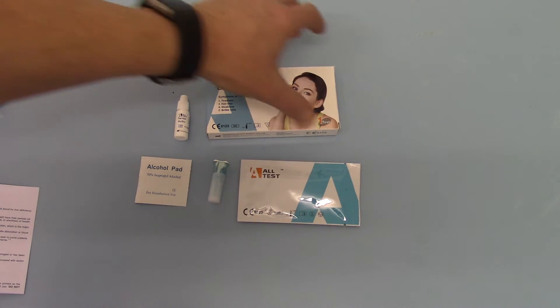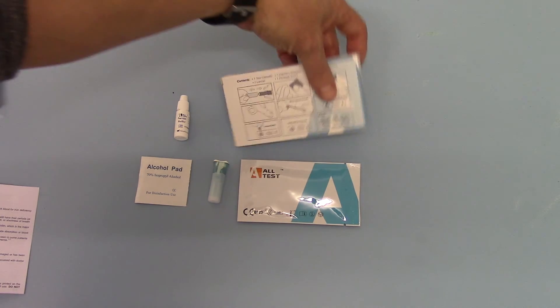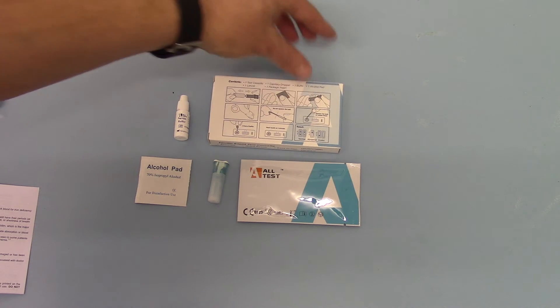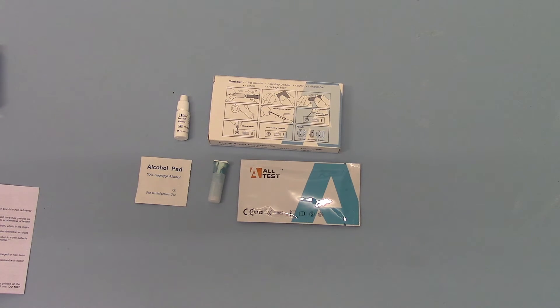Now it's a straightforward positive or negative result for ferritin. If we just show you the back of the pack there are simple instructions on there and how to interpret your results. These will give you an indication of whether your ferritin is below a certain level.